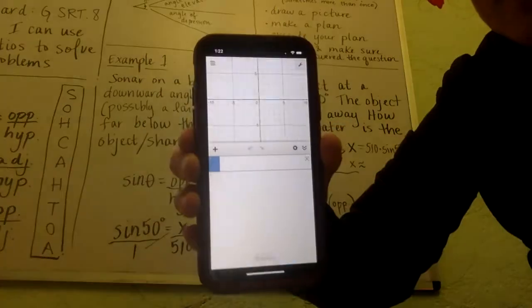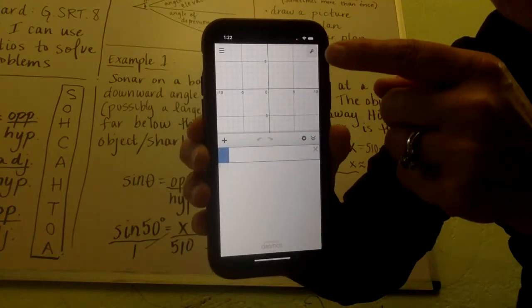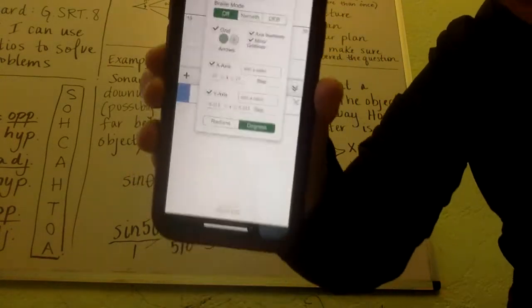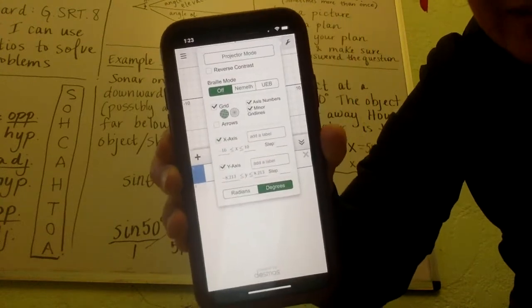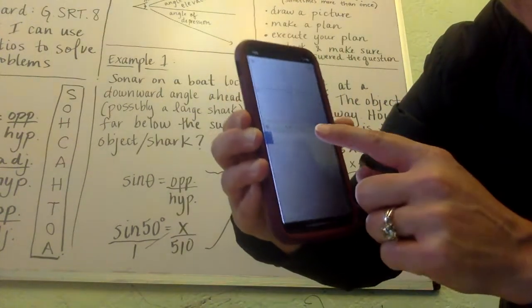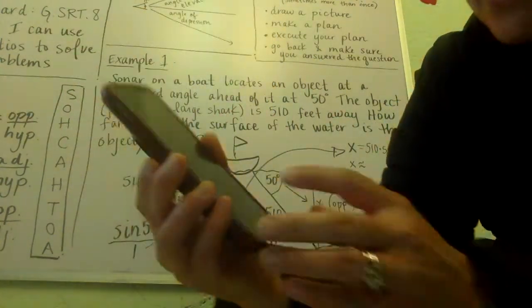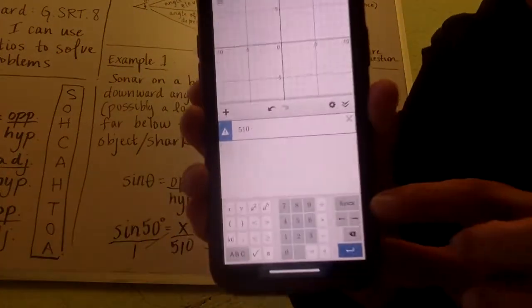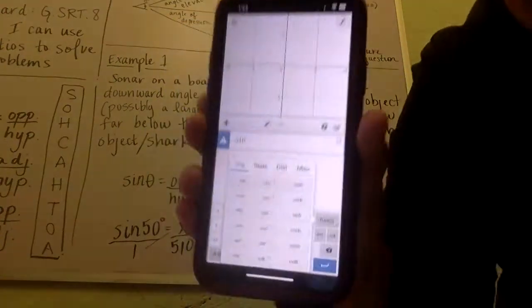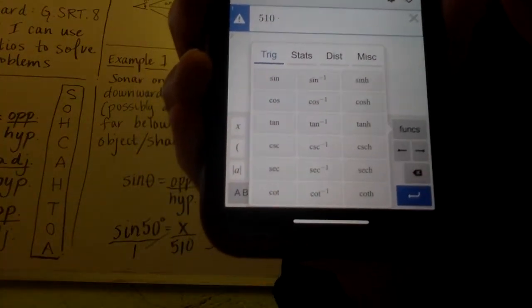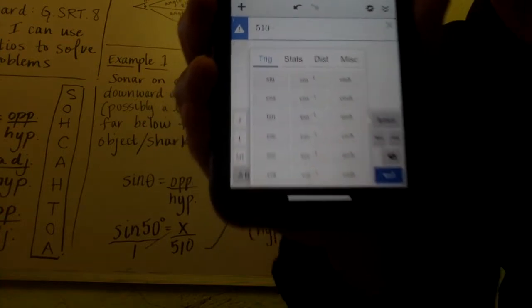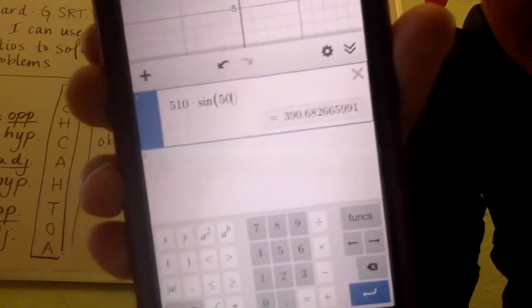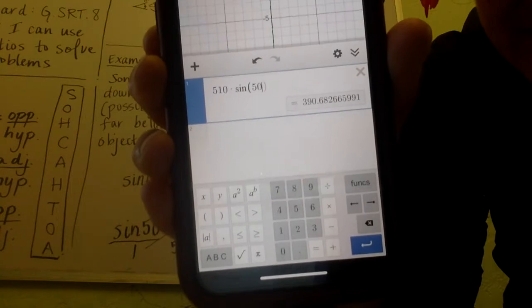First, we want to be sure that we're in degrees. Come up to the wrench and click on it. See the buttons for radians and degrees? Tap degrees so it's highlighted, because we're dealing with 50 degrees in this problem. Now we just need to punch this out. We're going to punch out 510, then multiplied by. Go to functions - see how trig is highlighted? Find the sine function in the upper left. Then 50 degrees.